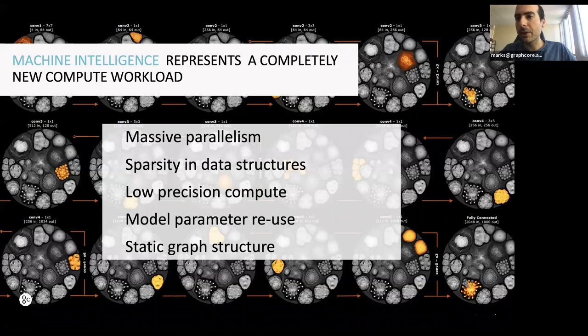If you were thinking about what machine learning is going to look like in another 10 or 20 years, there's a few trends that have become very obvious to us and made us design the hardware the way we did. The first is massive parallelism. The second is sparsity in data structures. The third is low precision compute. We've seen this validated by companies like Google, noticing that you don't need very high precision compute for machine learning.